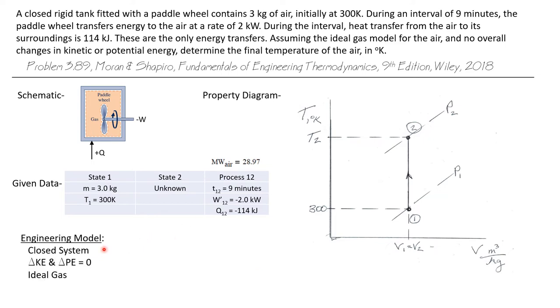We'll model this system as a closed system with no changes in kinetic or potential energy. And we'll consider the air to be an ideal gas. And we want to calculate T2 in degrees Kelvin.